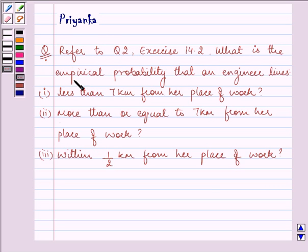What is the empirical probability that an engineer lives less than 7 km from her place of work, more than or equal to 7 km from her place of work, and within half km from her place of work?